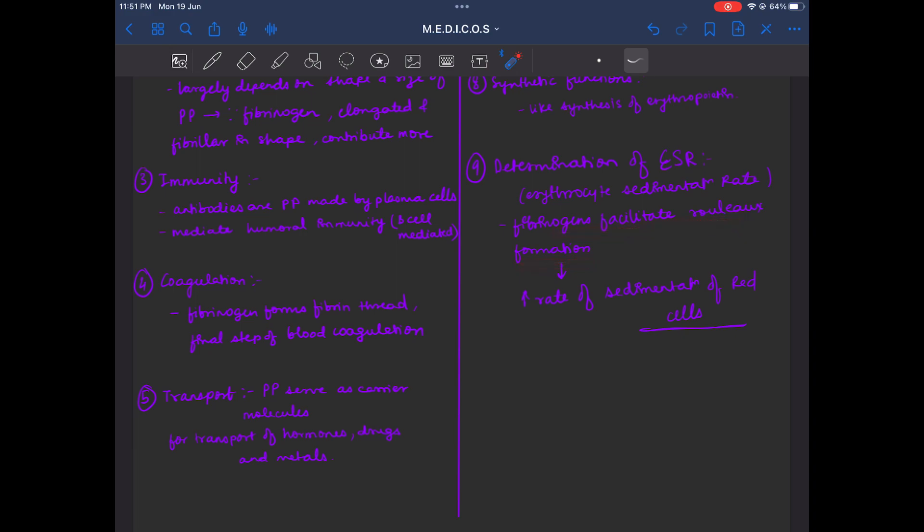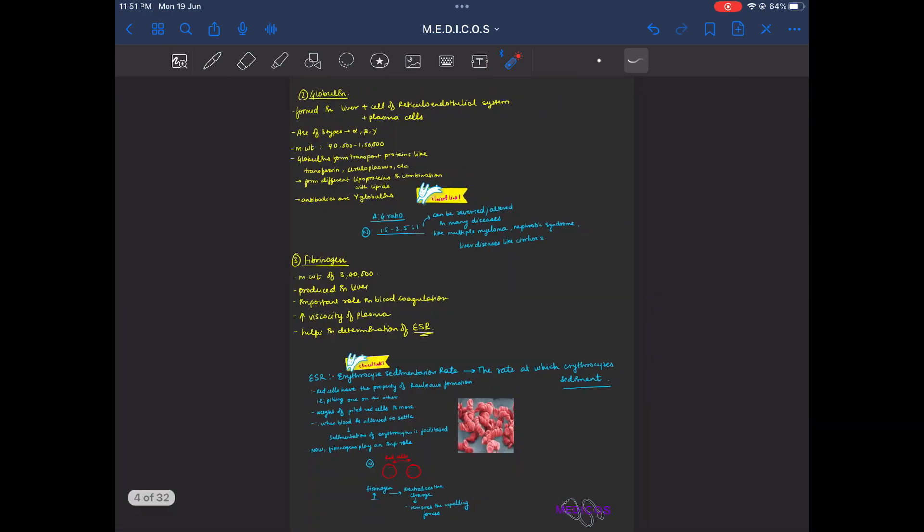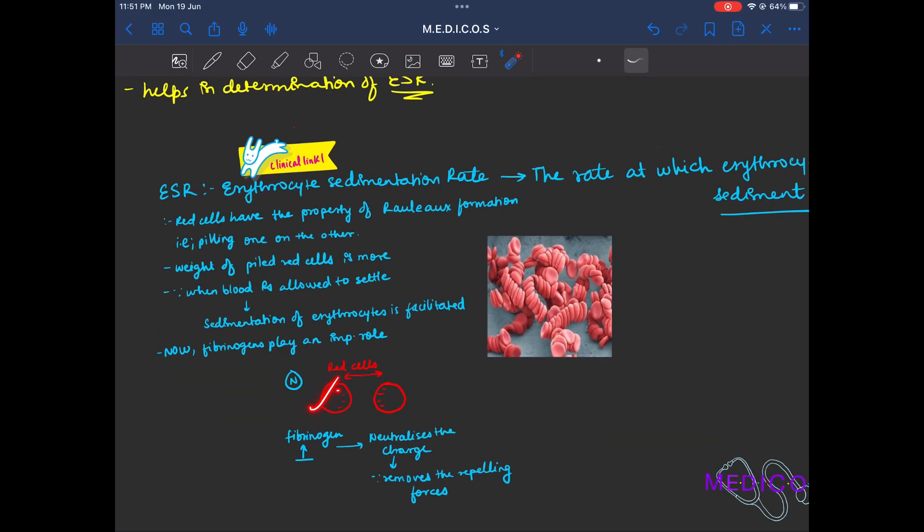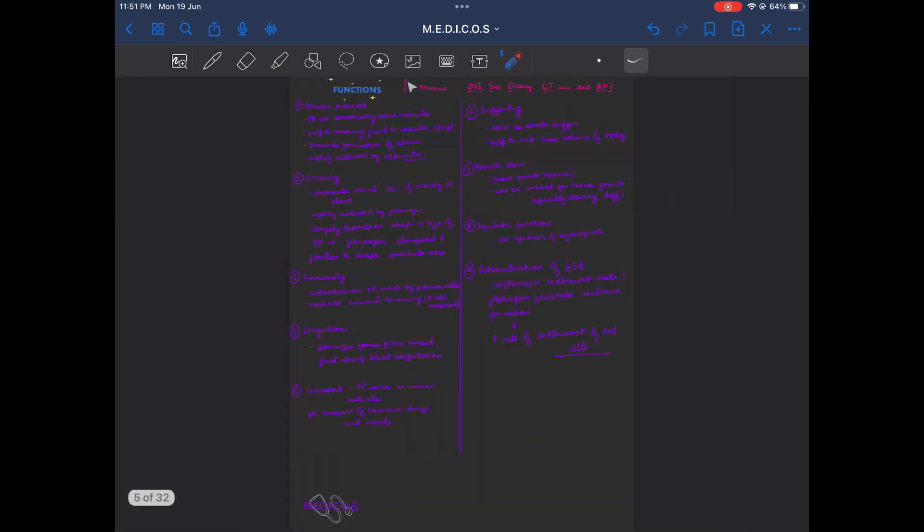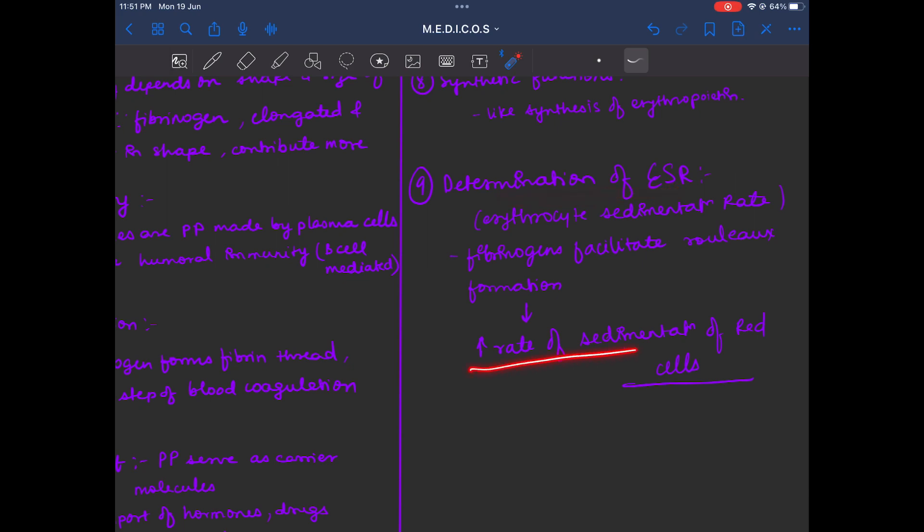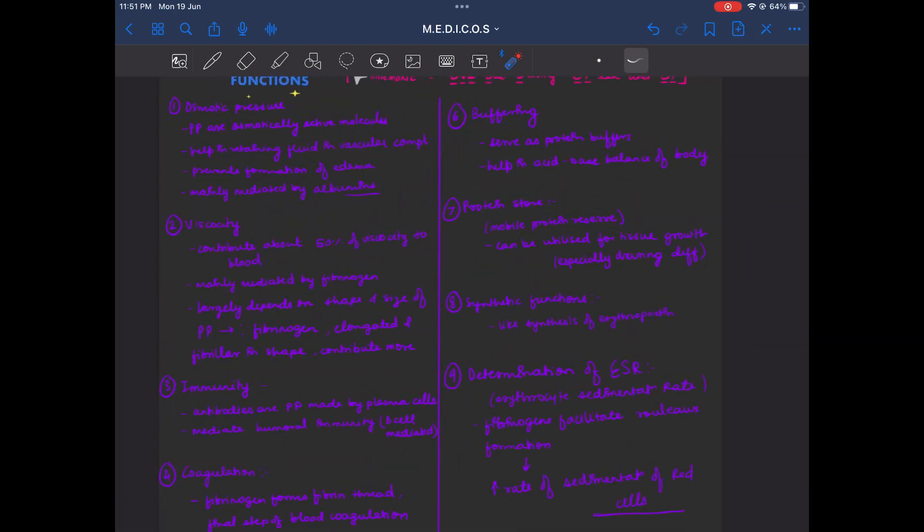Determination of ESR. Erythrocyte sedimentation rate. Fibrinogen facilitates the rate by neutralizing the negative charge of the membrane of the RBCs. It helps in determination of rouleaux formation.